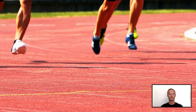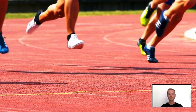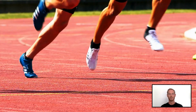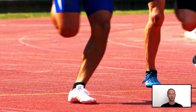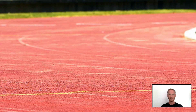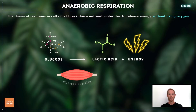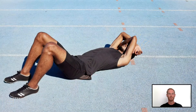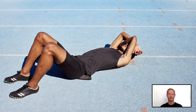During high-intensity exercise, oxygen cannot be delivered quickly enough for the muscle cells to respire aerobically, so anaerobic respiration makes up the deficit. Anaerobic respiration converts glucose to lactic acid, which accumulates in the muscle cells and blood. This causes discomfort and muscle fatigue, leading to a reduction in intensity or the need to stop and rest.